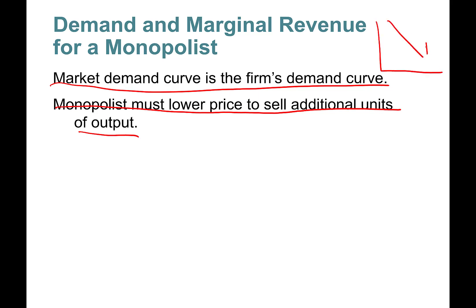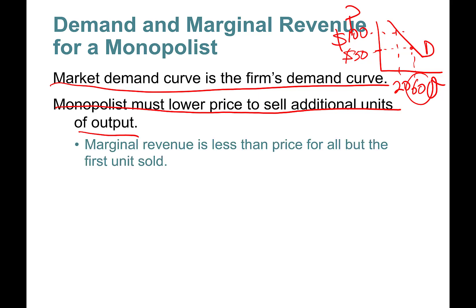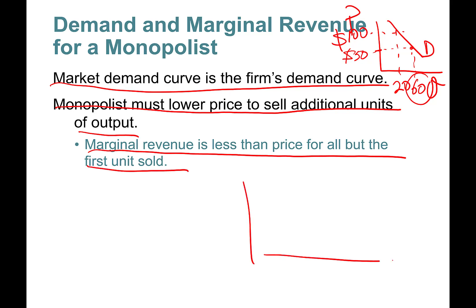On your demand curve — quantity versus price — for these cable services you might charge $100, and maybe 20 people will buy. If you want to sell more, reduce the price to $50, read it off the x-axis, and now you have 60 customers — it could be 60,000. So marginal revenue is less than the price for all but the first unit sold.